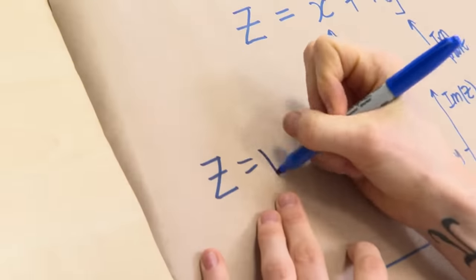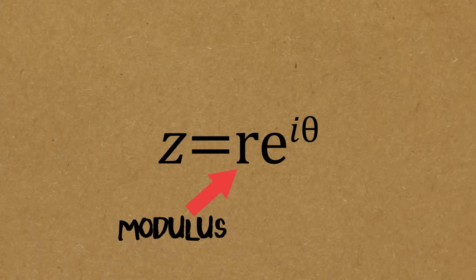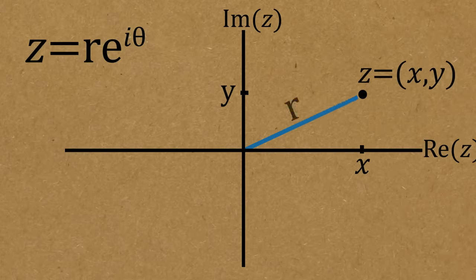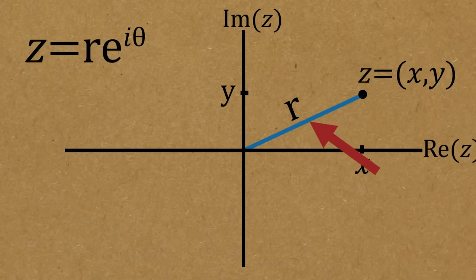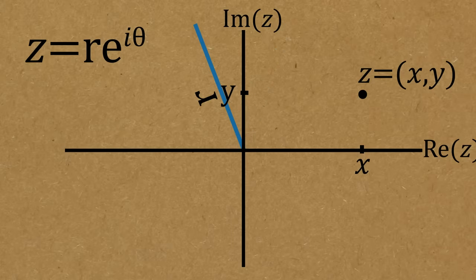There's another way: the polar form. Here z equals r·e to the i·theta. We call r the modulus of z, and theta the argument of z. The modulus is the distance from the origin to our complex number — draw a straight line, and that distance is r. Theta is an angle, because if I just told you we're at distance r from the origin, you could be anywhere on a circle. All points at distance r from the origin form a circle, so we also need theta.